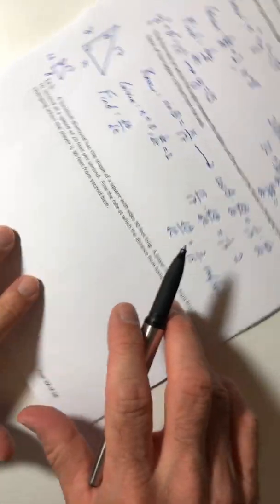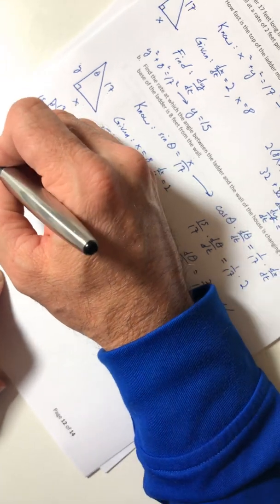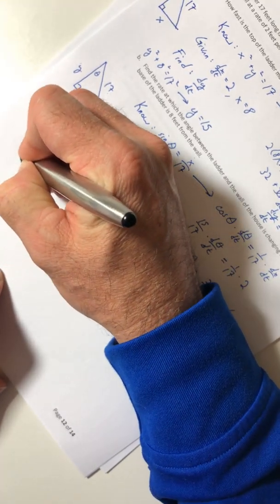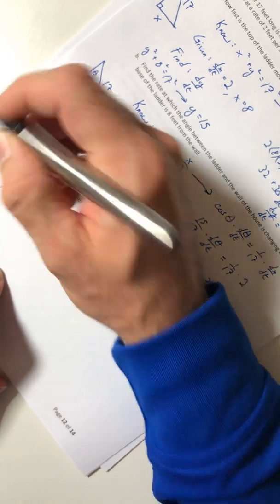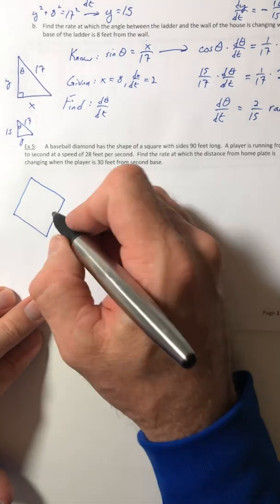So a baseball diamond, I'm just going to make a square. There's my baseball diamond. Sides are 90 feet long.